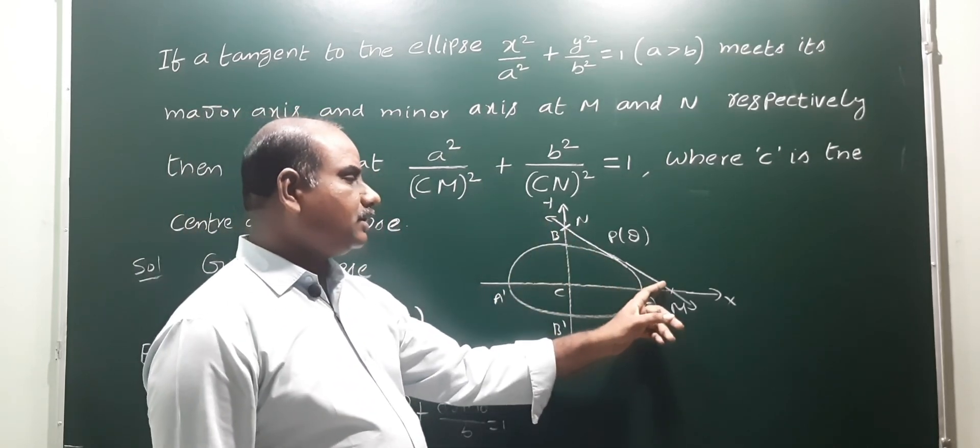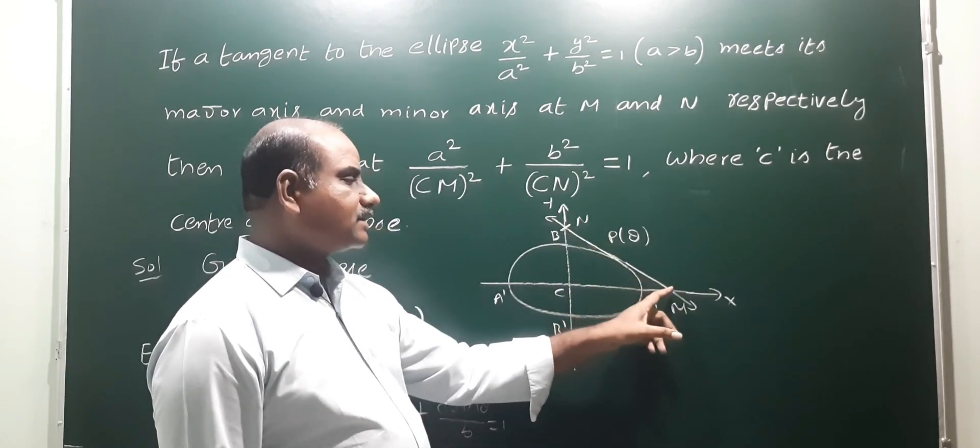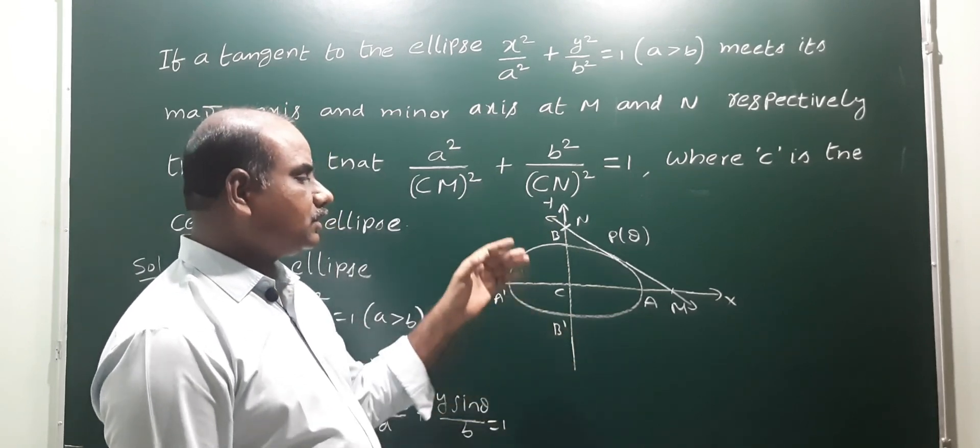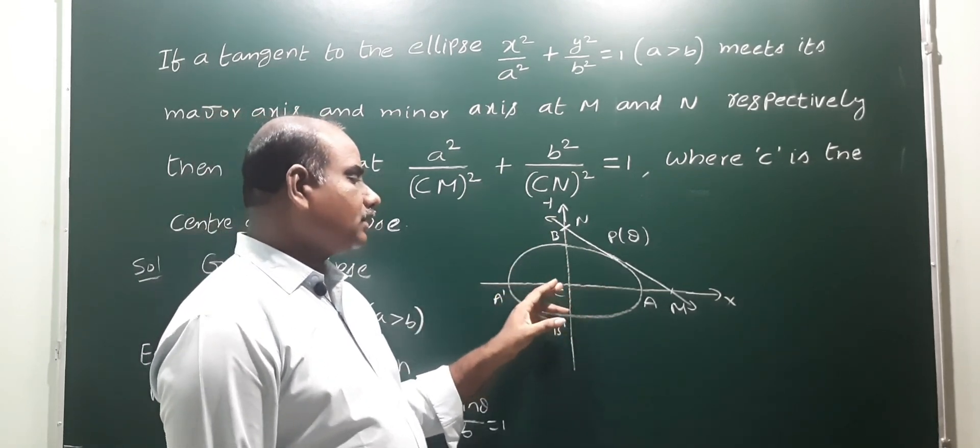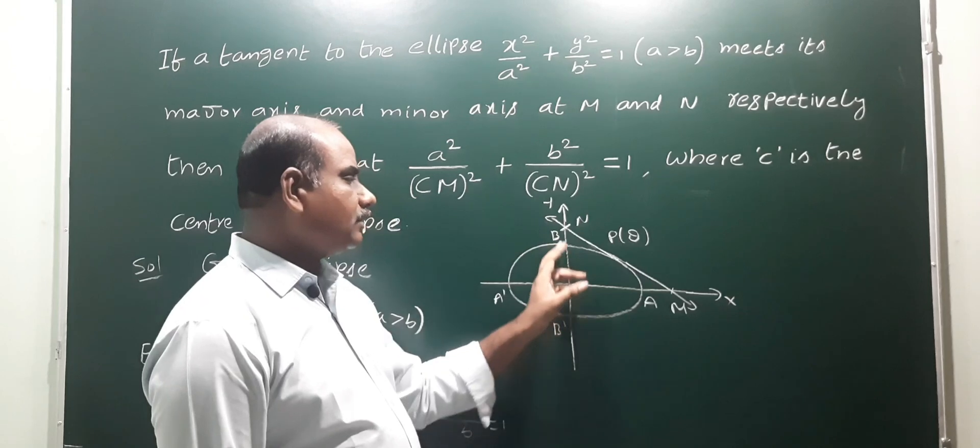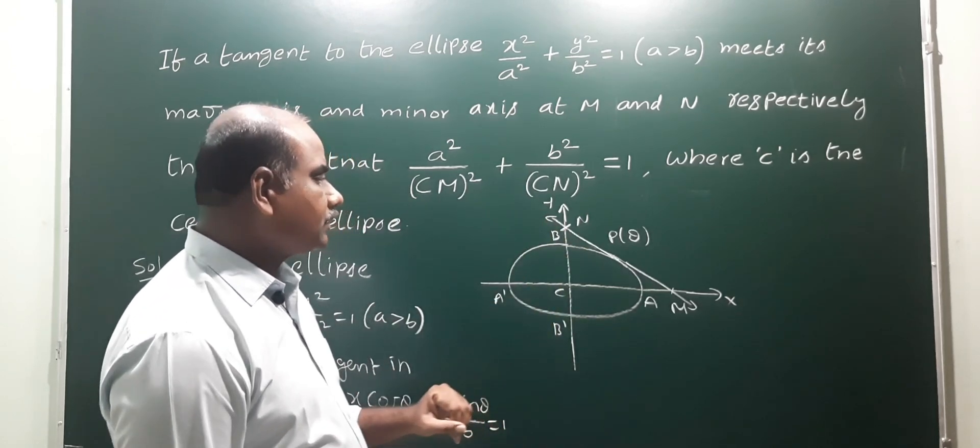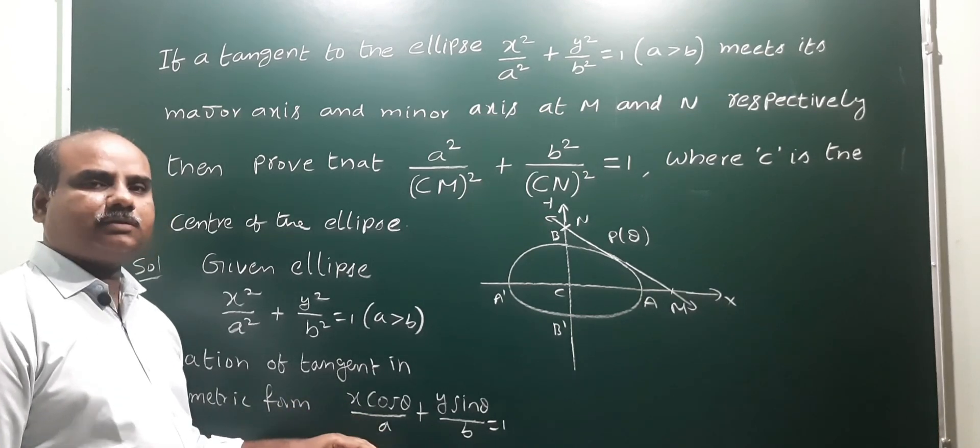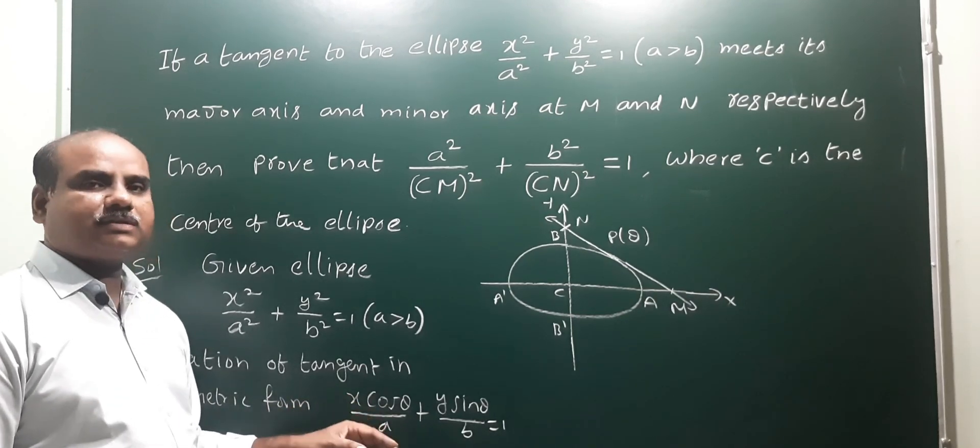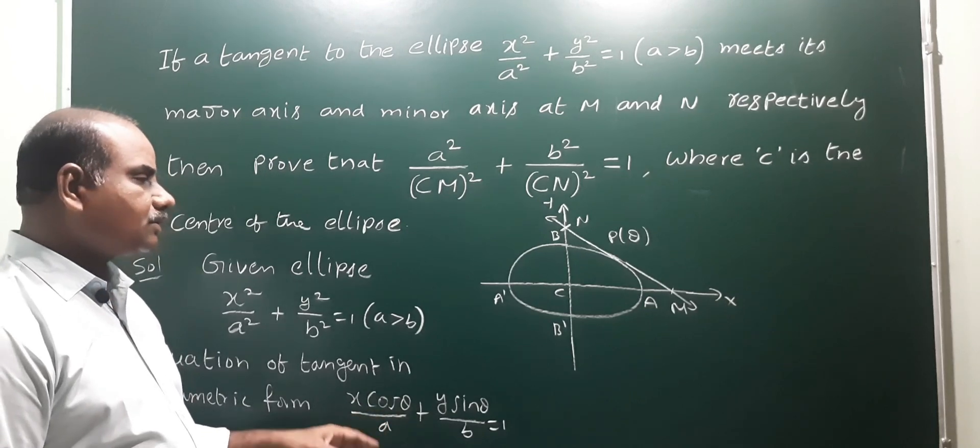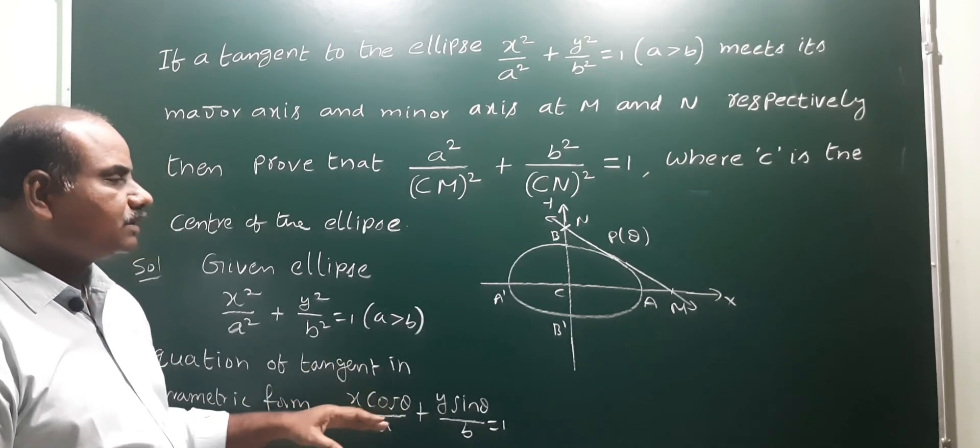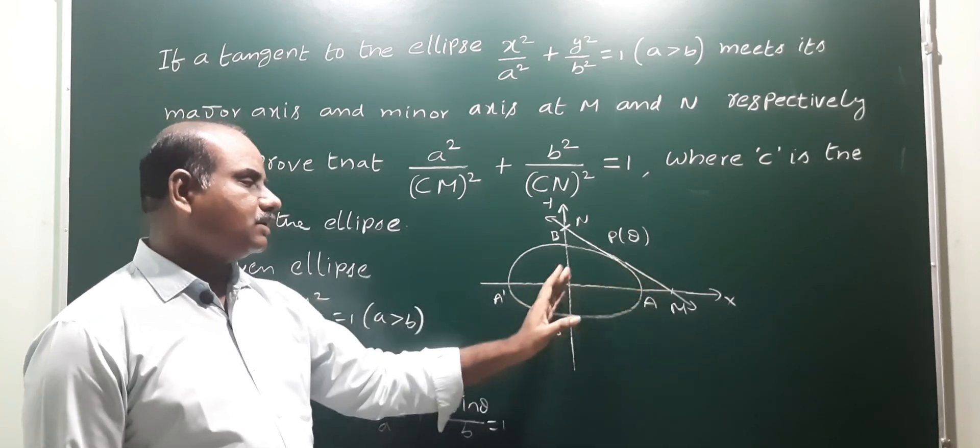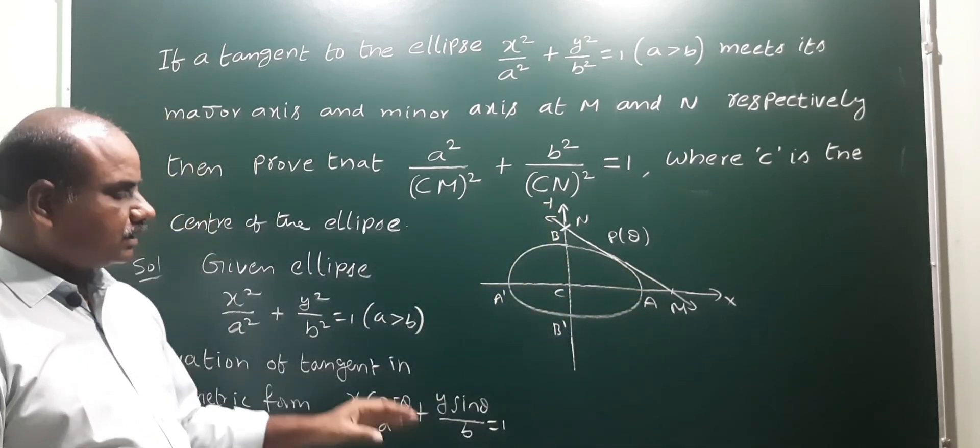That means X coordinate and Y coordinate. So the equation of tangent is in intercept form. That means X by A plus Y by B is equal to 1. So that formula matches: CM is X intercept and CN is Y intercept.